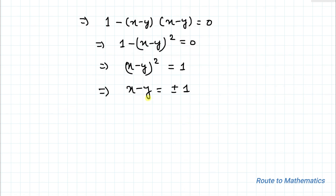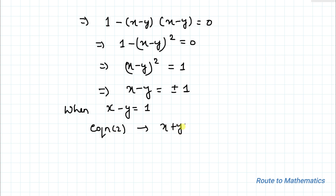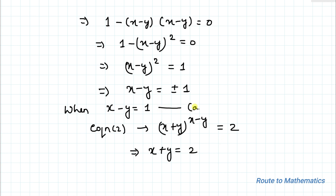We have two values of x minus y: plus 1 and minus 1. For Case 1, when x minus y equals 1, substituting into equation 2 gives (x plus y) to the power 1 equals 2, so x plus y equals 2. Let's call this equation A and x minus y equals 1 equation B.